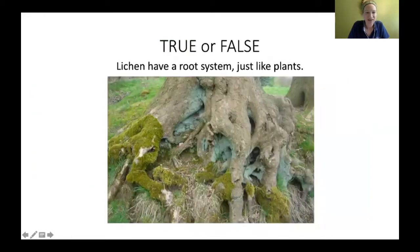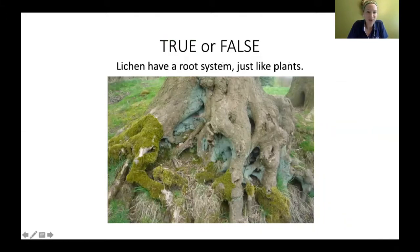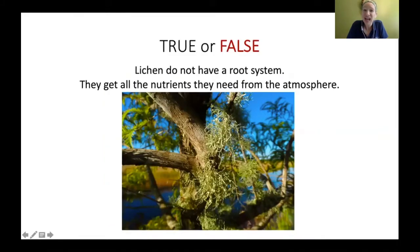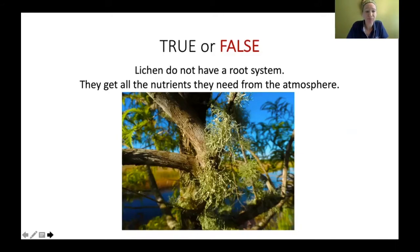True or false: lichen have a root system just like plants. The answer is false. Lichen don't have a true root system that pulls up water. They get all their nutrients from the air or atmosphere. They use only little anchors — we'll talk about those in a bit — to hold on to things, but those anchors don't take up nutrients the way roots do.